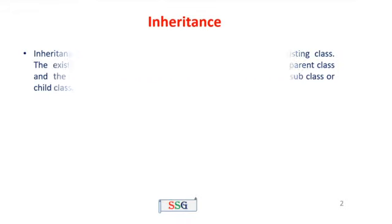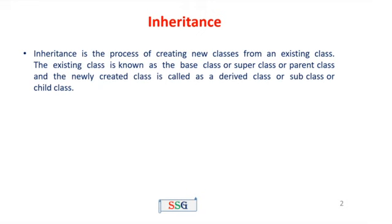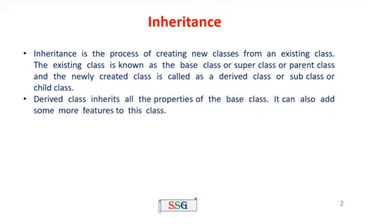Inheritance is the process of creating new classes from an existing class. The existing class is known as the base class, super class, or parent class. And the newly created class is called as a derived class, subclass, or child class.